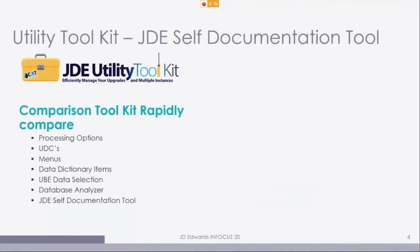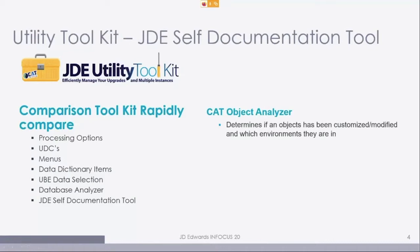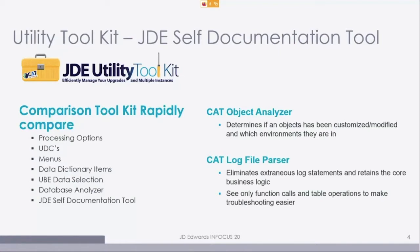In general, the whole toolkit set we have can rapidly compare processing options, UDCs, menus, and all these things. We also have our CAT Object Analyzer, which allows us to zero in on estimates for implementations, and also allows customers to assess the state of their system. And then there's the log file parser, focused more for developers — it trims logs down to just necessary statements, limits data, and gets timings for business function calls for performance examination.